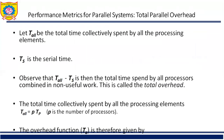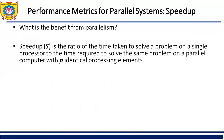The total overhead is given by TO = P×TP − TS, where P×TP is the total time collectively spent by all processing elements, P is the number of processors, and TS is the serial time. Subtracting TS from P×TP gives the total overhead.